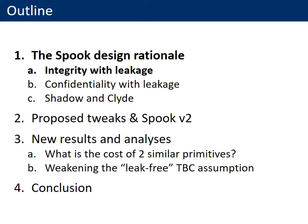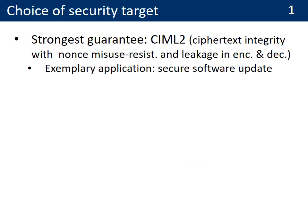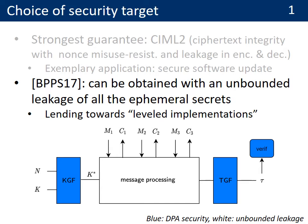I will start with our design choices regarding integrity in the presence of leakage. For this first step, our choice of security targets is direct. We aim for the strongest possible guarantee, which is ciphertext integrity with nonce-misuse resistance and leakage in encryption and decryption. A typical application motivating this choice is secure software updates. Based on this choice, the starting point of our design is the observation that it can be obtained with an unbounded leakage of all the ephemeral secrets of an authenticated encryption scheme, leading towards so-called leveled implementations.